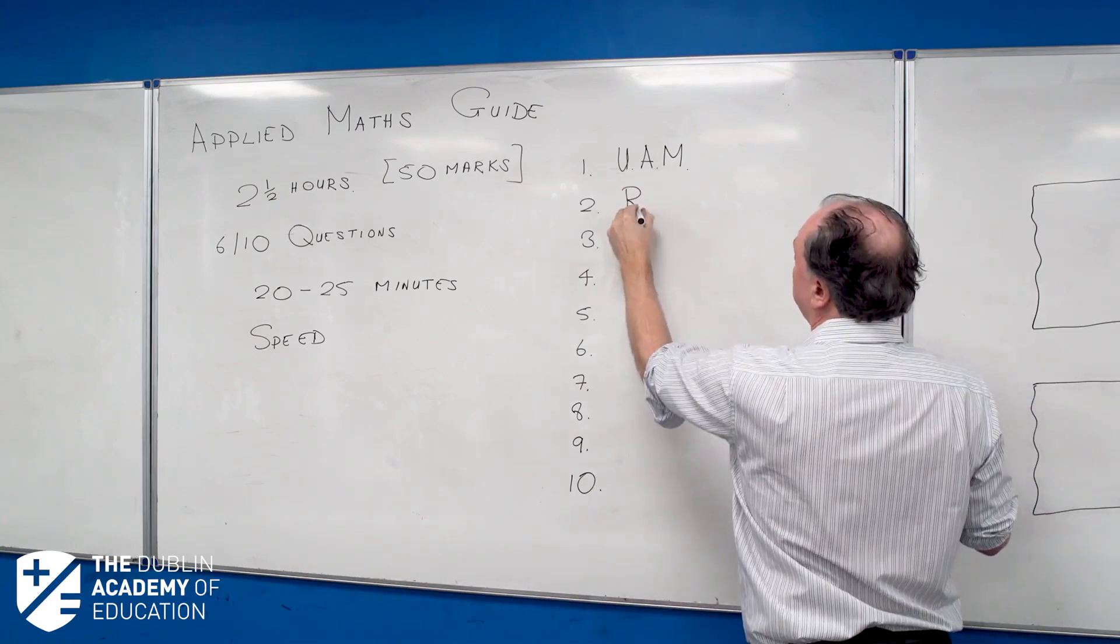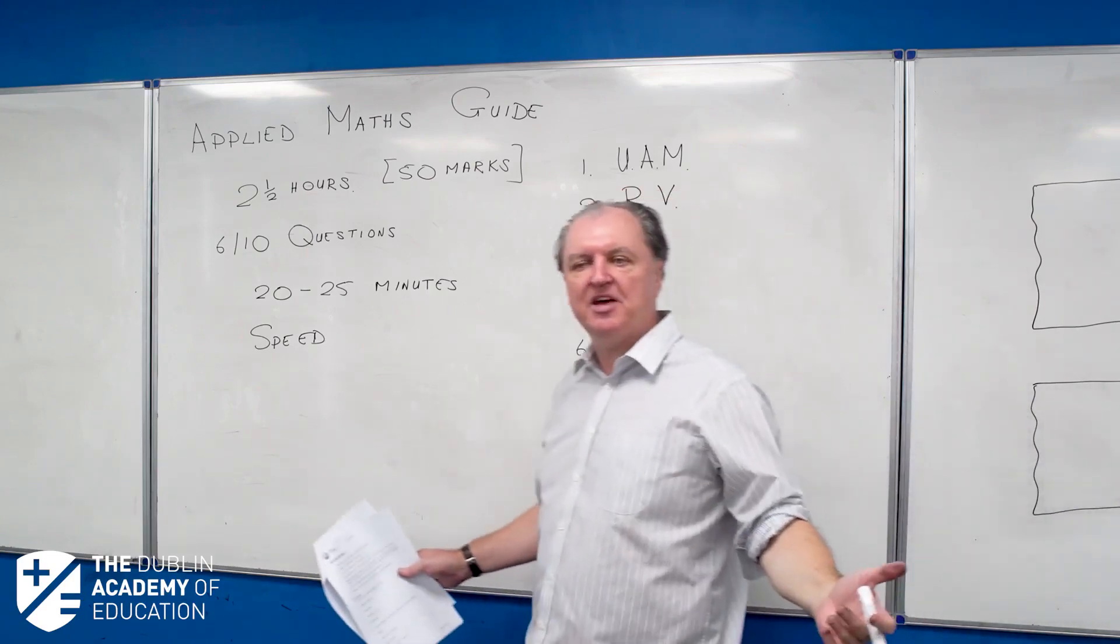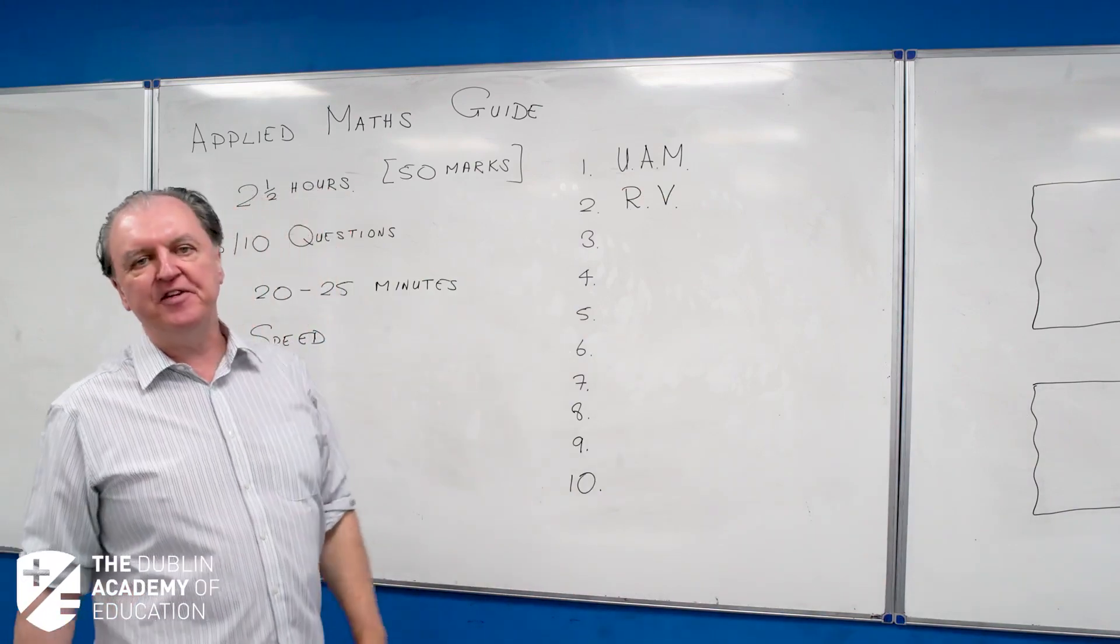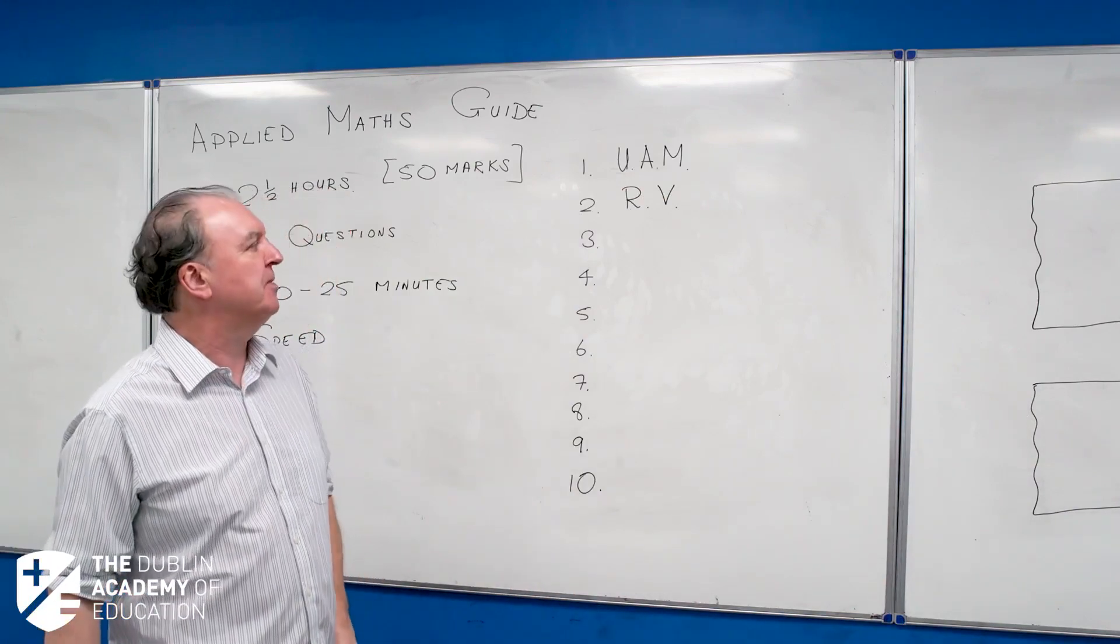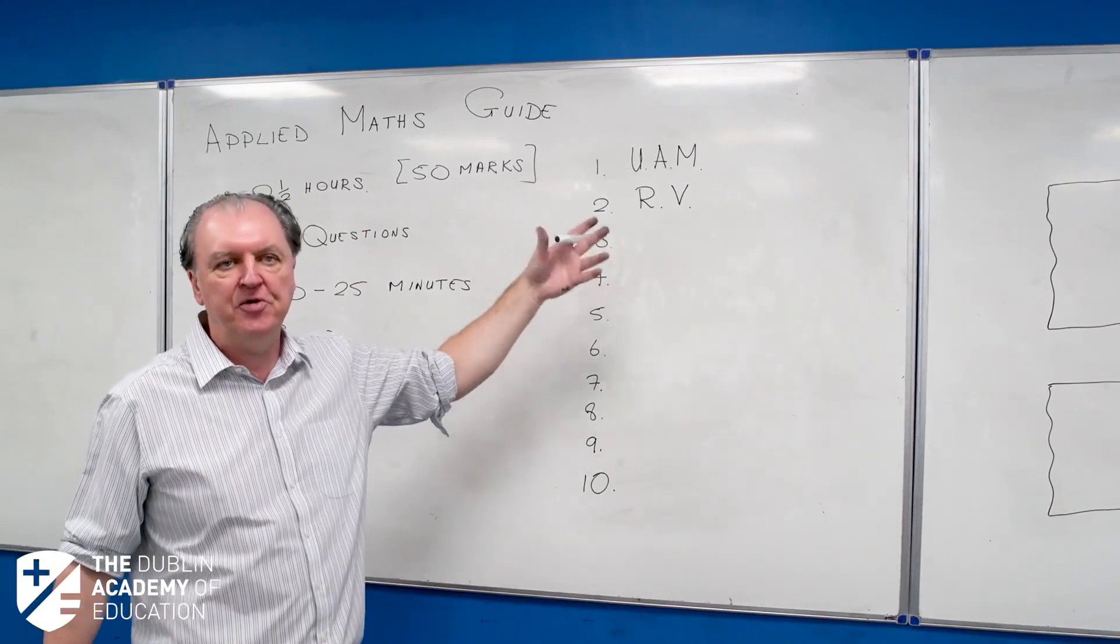Question two is on relative velocity. A lot of students hate that. It involves vectors, boats traveling in different directions at different speeds. Some students find it very difficult. So you make a choice as to whether you want to do it or not.